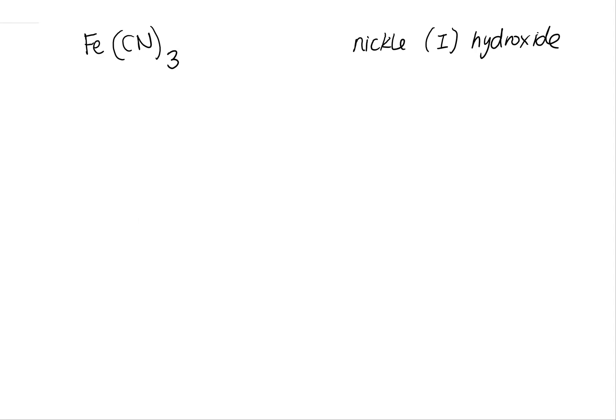Remember, transition metals can have multiple different types of charges, so I can't look at an iron and know exactly what charge it is. So we'll walk through two examples to highlight this.